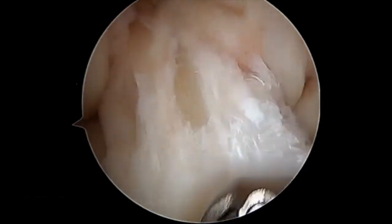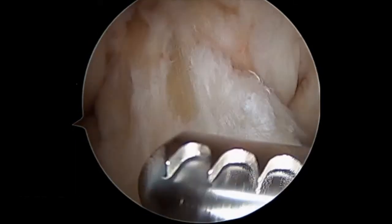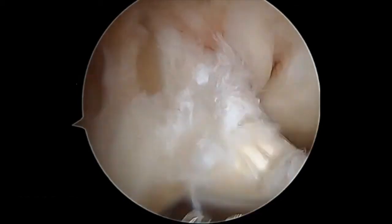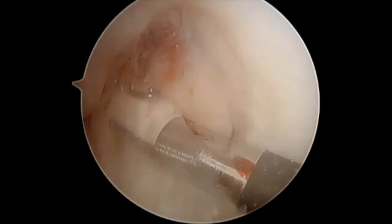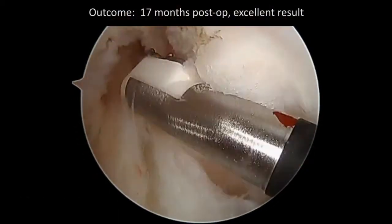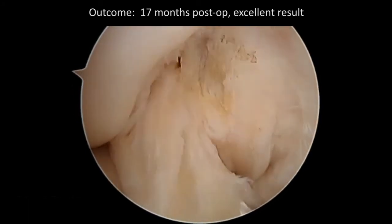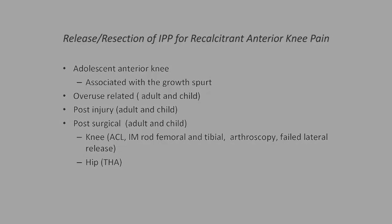The shaver, hood reversed, is passed along the ACL, removing all trace of the IPP to the level of the airmeniscal ligament. The IPP has now been completely removed and hemostasis is completed using an RF device. The fat pad, now detethered, has no notch attachment. This operation can be used as a safe, reliable first surgical step for recalcitrant anterior knee pain.